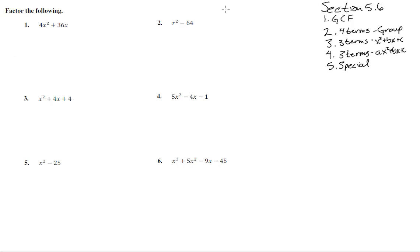Here we are in Section 5.6 with numbers 1 through 6. We have the rules for factoring, and we're just factoring the following. We've got these five rules that we've been working on, and now we're going to put them together.